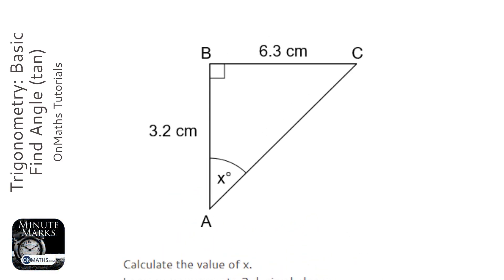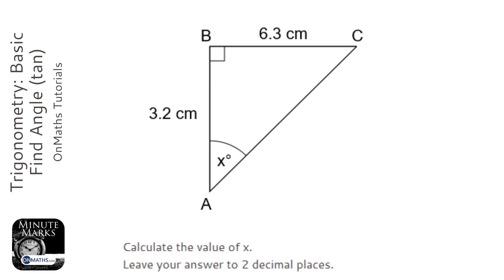In this question we have a right angle triangle with two lengths and an angle. The angle is unknown, so whenever we have two lengths and an angle in a right angle triangle, we'll be using trigonometry.